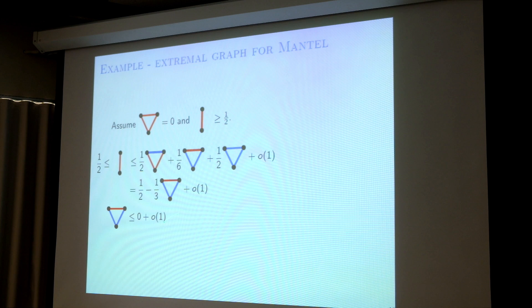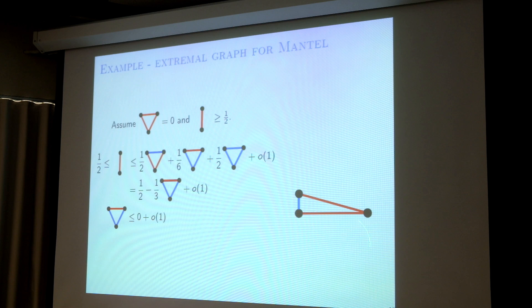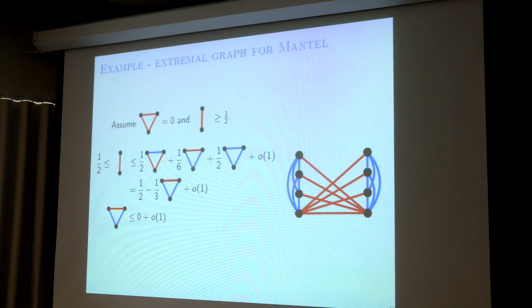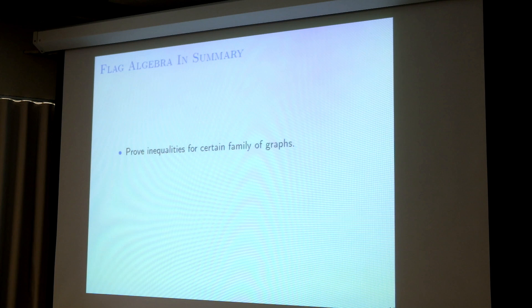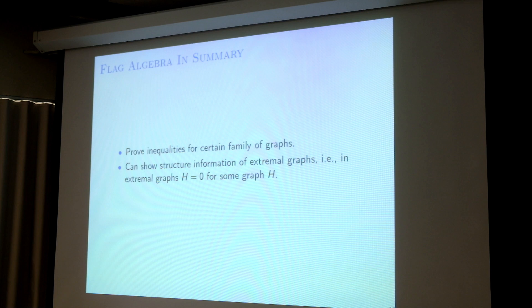Simply because of the algebra. It can actually tell you the structure: because cherry density is zero, you start from a red edge, pick another edge — you have to have this, and you can build up the complete bipartite graph. So instead of just showing the density, it also tells you something about the structure, namely that some structure has density zero. In summary, the flag algebra proof can prove some inequalities for certain families of graphs — for example, triangle density zero — and instead of just proving inequalities, it can also show structure: showing that for some small graph H, its density is zero in the extremal structure.